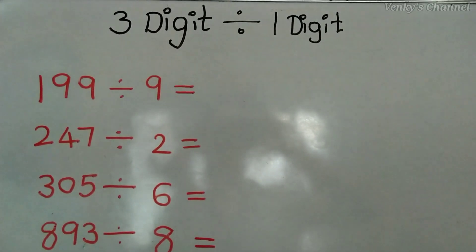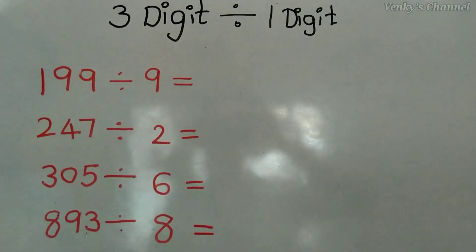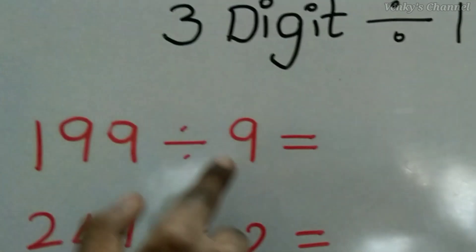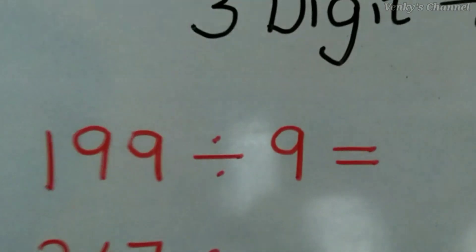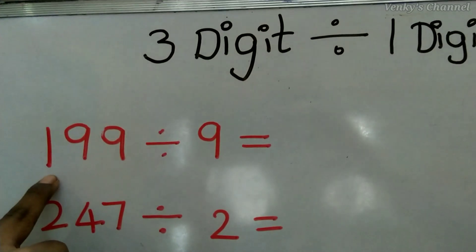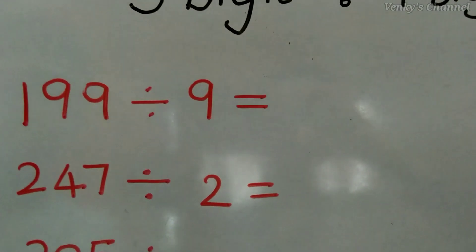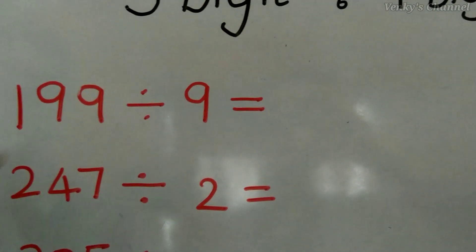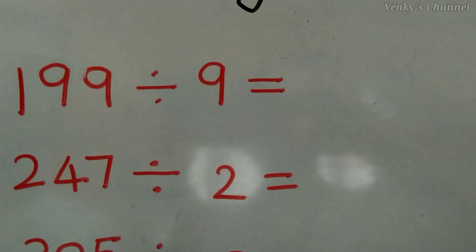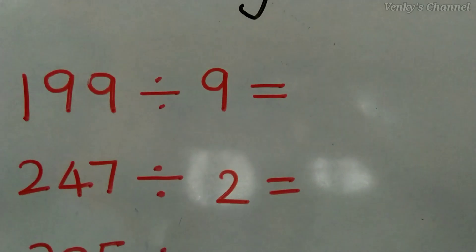The first step in visualization is to check the first digit in the dividend against the divisor and whether it is greater than the divisor. Here the first digit in the dividend is 1, and 1 is less than 9, so we cannot take it. We have to include the next digit as well — 19 is greater than 9, so we can use it.